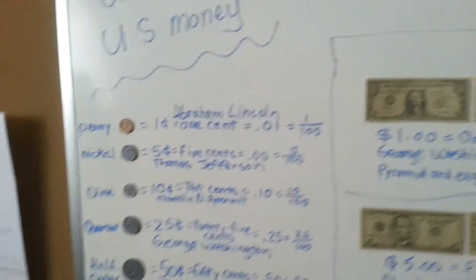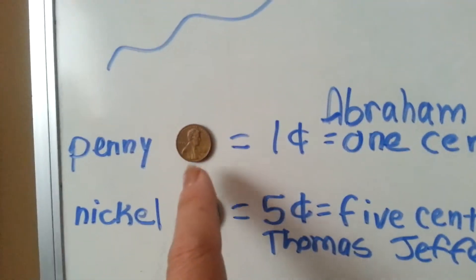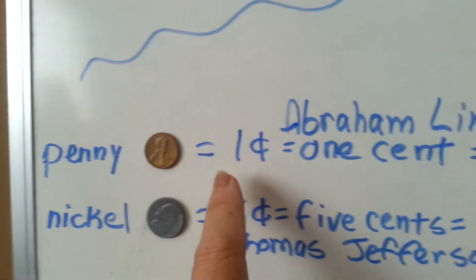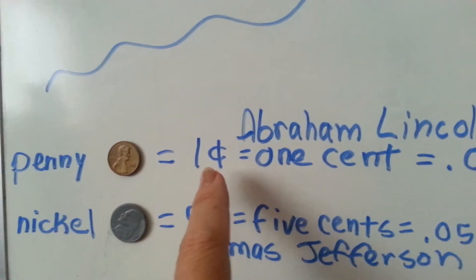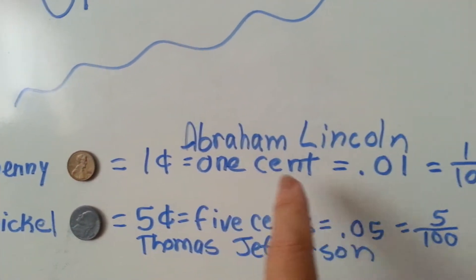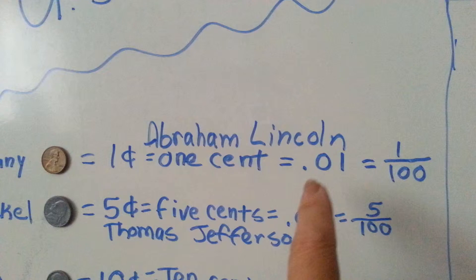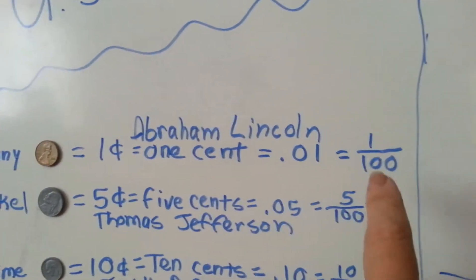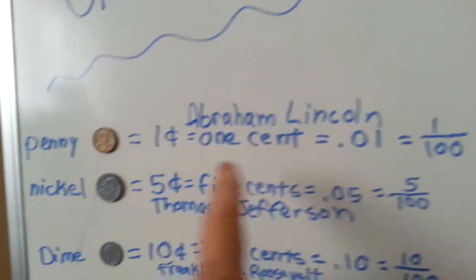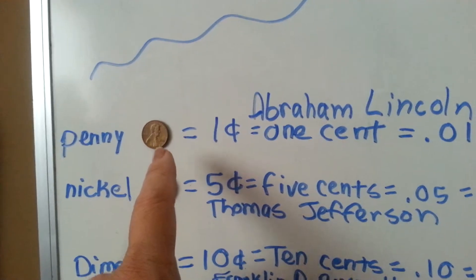Let's look at the coins. This is a penny, and it is equal to one cent. It is .01 of a dollar, one one-hundredth, and it has a picture of Abraham Lincoln on it.